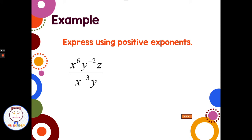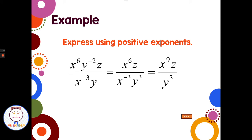A harder one: x to the sixth, y to the negative two, z over x to the negative three, y. For y to the negative two in the numerator, I bring it to the denominator — there's already one y there, so adding two more gives y to the third in the denominator. For x to the negative three in the denominator, I bring it up — there are already six x's in the numerator, adding three more gives x to the ninth. The z to the first stays. The answer is x to the ninth z over y to the third.